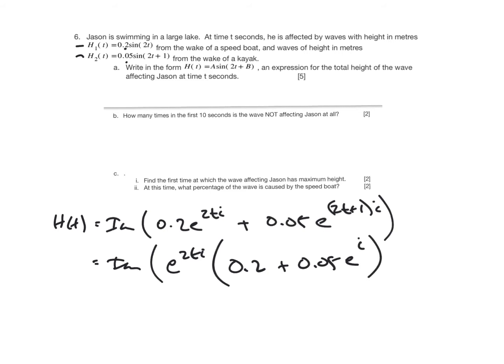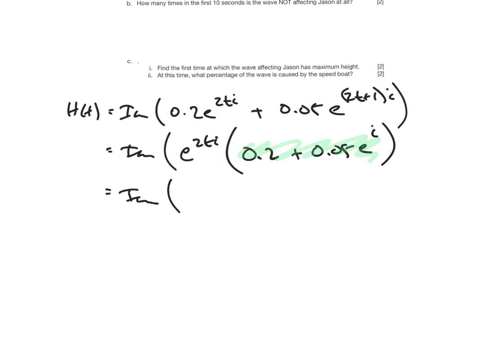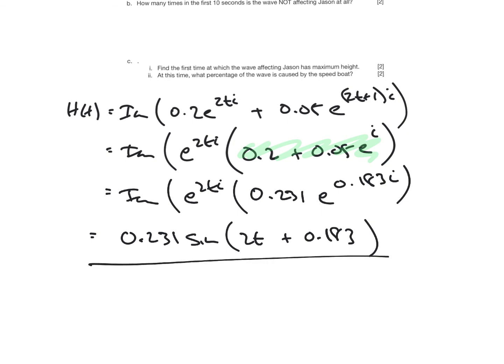And so if I come along then and put this into my GDC, straight off, I end up with equal to the imaginary part of e to the 2ti, times, I'm just going to steal the numbers, 0.231e to the 0.183i. And so that I know that this is equal to 0.231 sine 2t plus 0.183. That's the first part of the question. Here is my function for h.